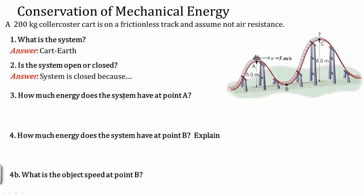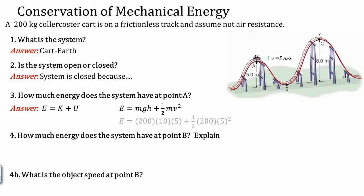How much energy does the system have at point A? At any point, the system is made up of kinetic and potential energy — MGH plus one-half MV squared. Plugging in the values, you get 1.25 × 10⁴ joules. This is how much energy the system has at point A.